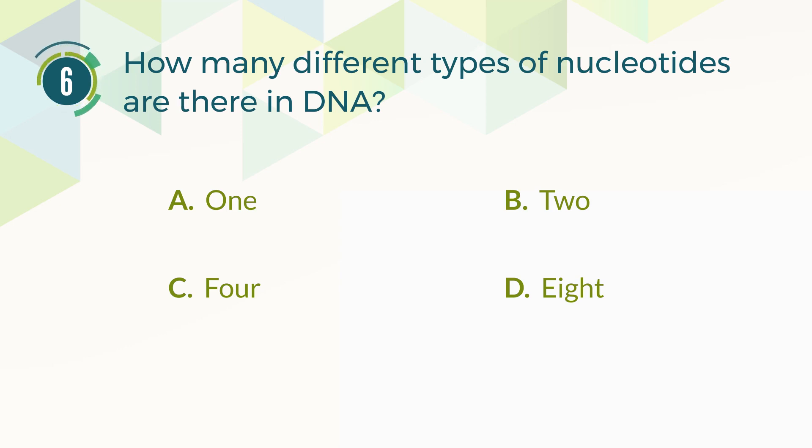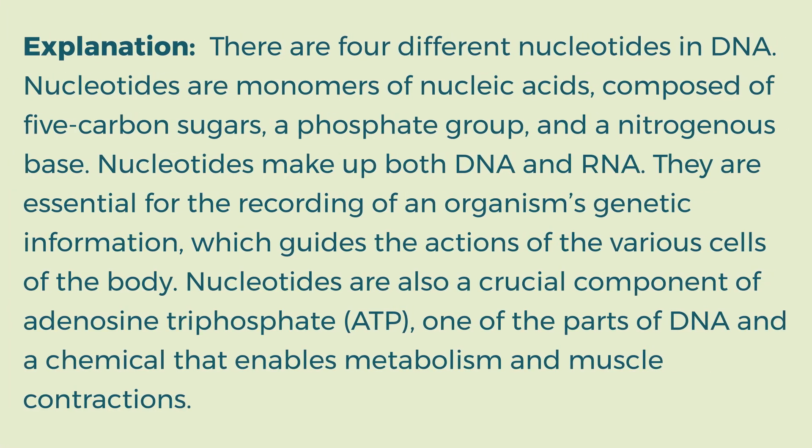The correct answer is C. 4. Explanation: There are four different nucleotides in DNA. Nucleotides are monomers of nucleic acids, composed of five carbon sugars, a phosphate group, and a nitrogenous base. Nucleotides make up both DNA and RNA. They are essential for the recording of an organism's genetic information, which guides the actions of the various cells of the body. Nucleotides are also a crucial component of adenosine triphosphate (ATP), and a chemical that enables metabolism and muscle contractions.